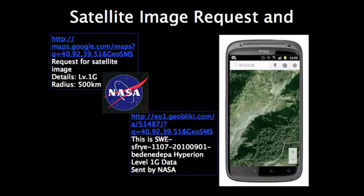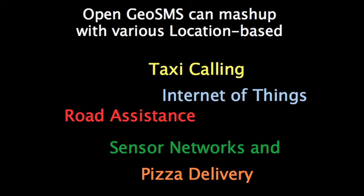We're also thinking about combining OpenGeoSMS with satellite imagery requests. We talked to NASA and they said the X and Y coordinates perfectly fit into the scenario. After the satellite acquires the image, it sends it back to our server and we send out the notification. OpenGeoSMS can also collaborate with many location-based services — pizza delivery, taxi calling, and so on.